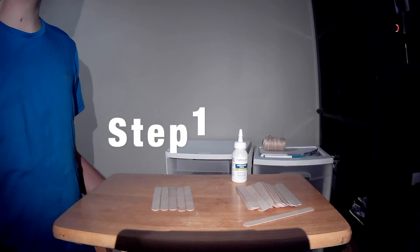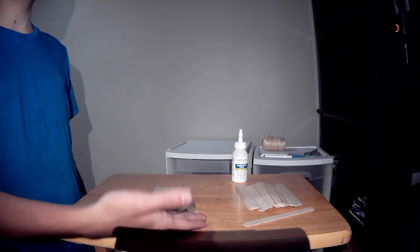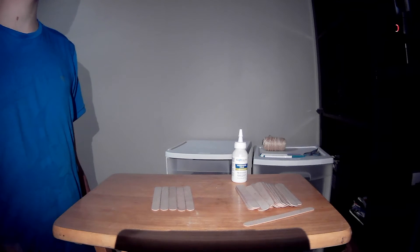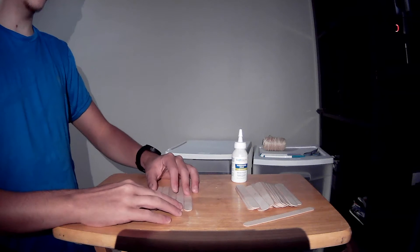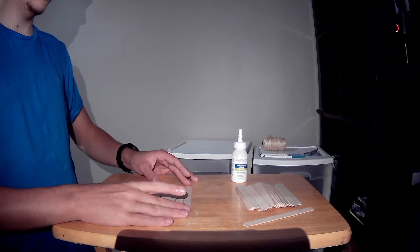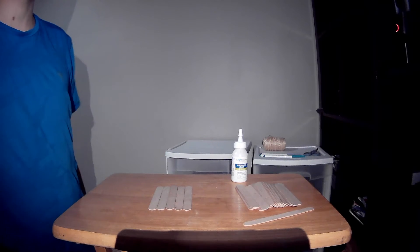Now step one, start by laying out your six popsicle sticks next to each other. This is going to be the bottom of the bird feeder. You got to make sure they're all nice and lined up so the base can be nice and even. Perfect!